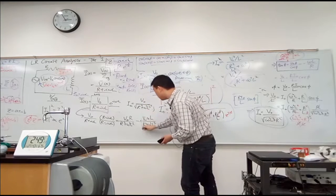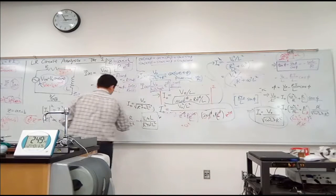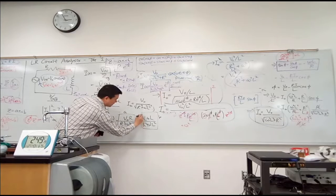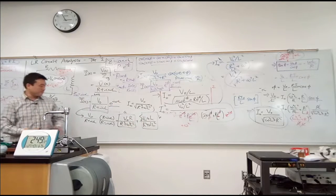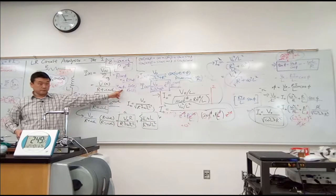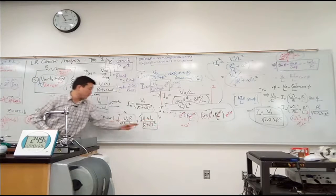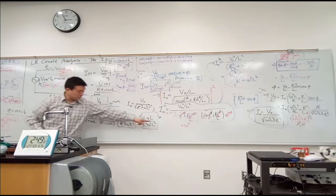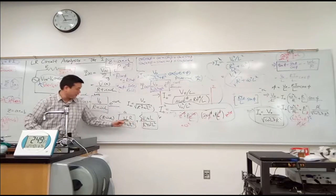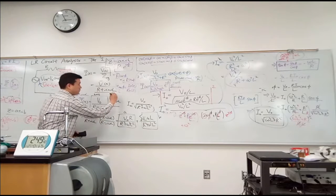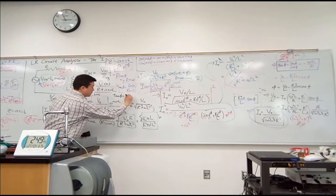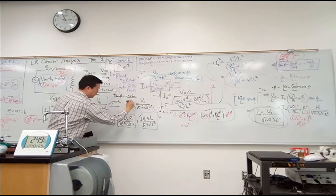So when you take the ratio of B to A, actually this minus sign should be included into B. You take the ratio of B over A, that's tangent of φ. And when you take the ratio of B over A, a lot of things will cancel out. The denominator will cancel out, V₀ will cancel out, and you'll get only ωL and R. So doing that, you'll get tangent of φ is equal to minus ωL over R.